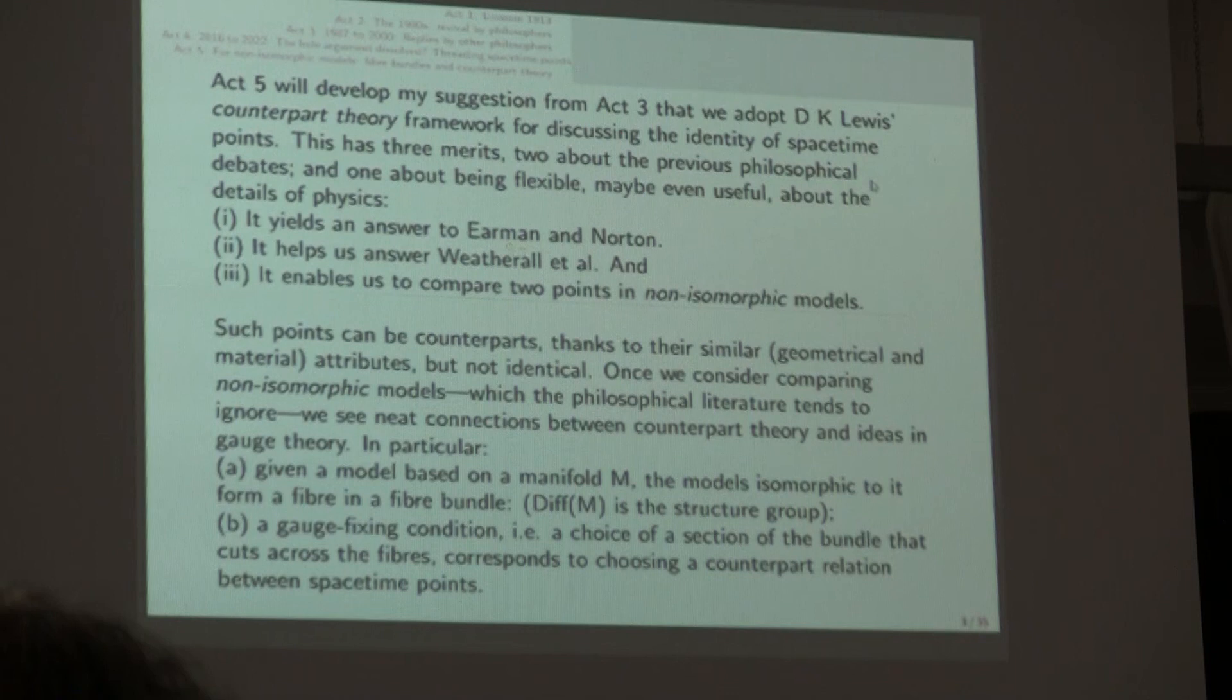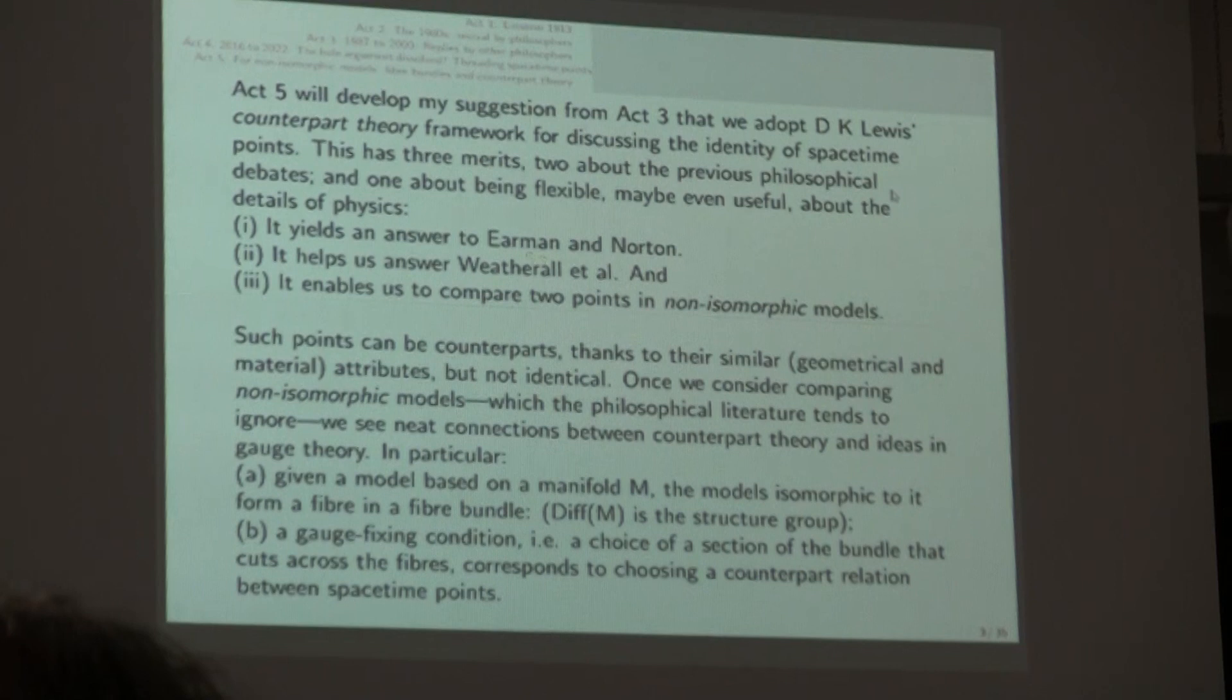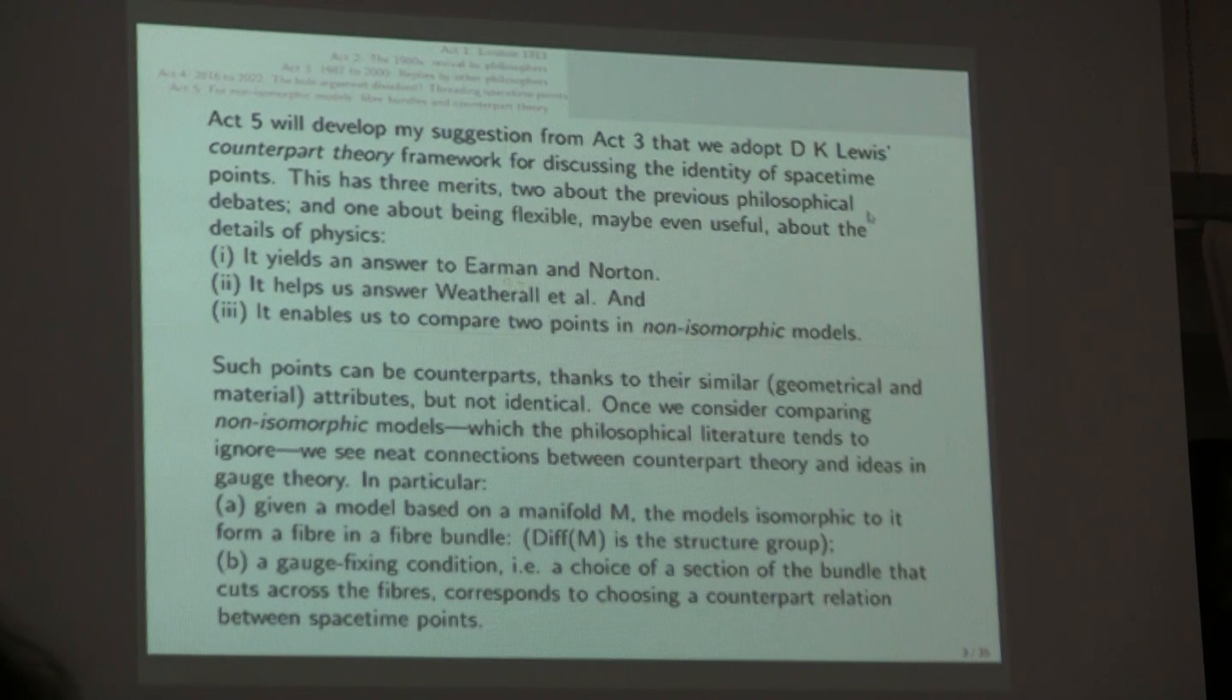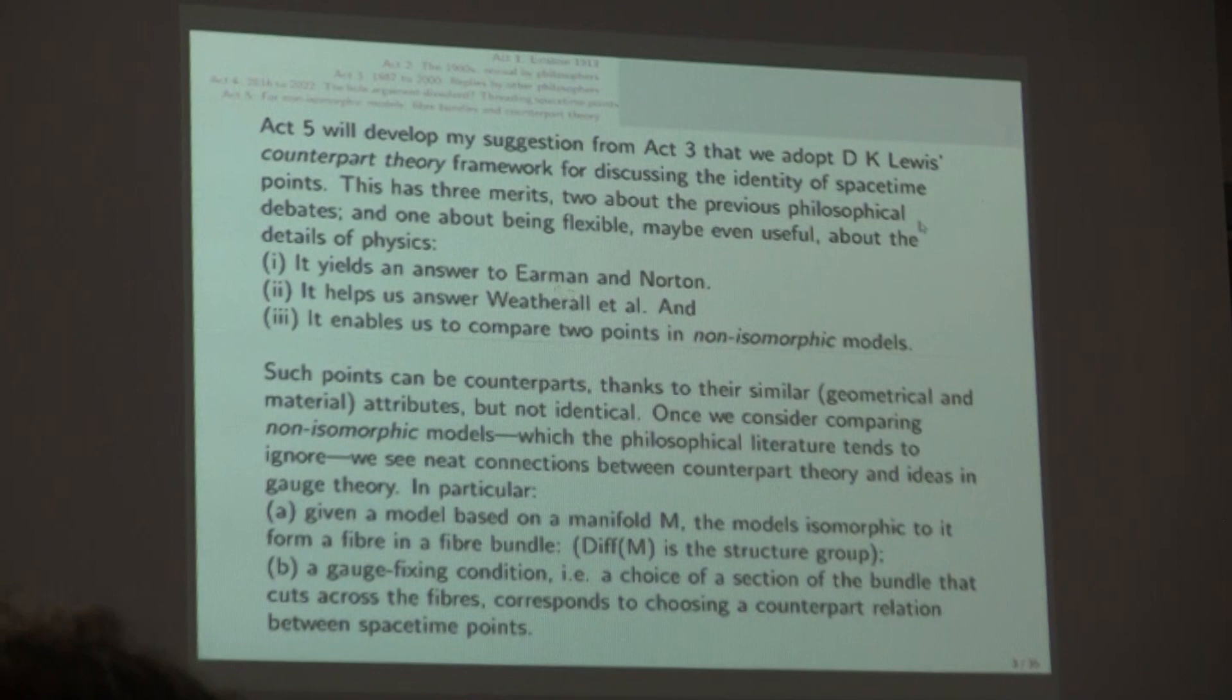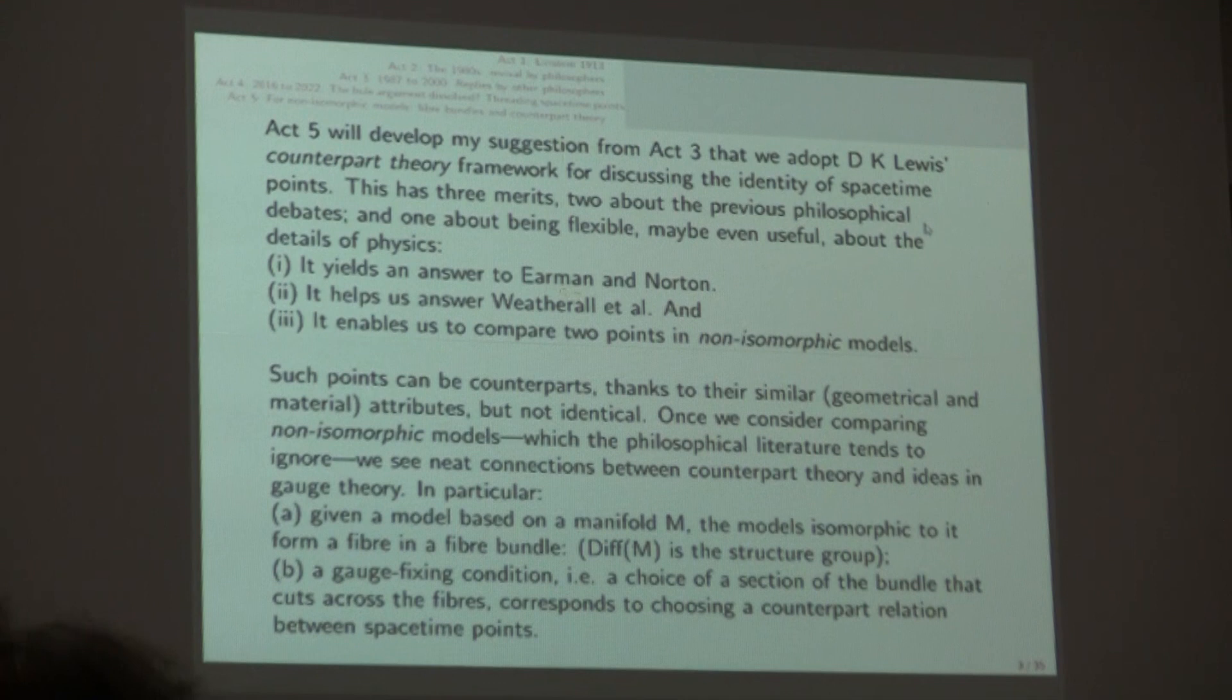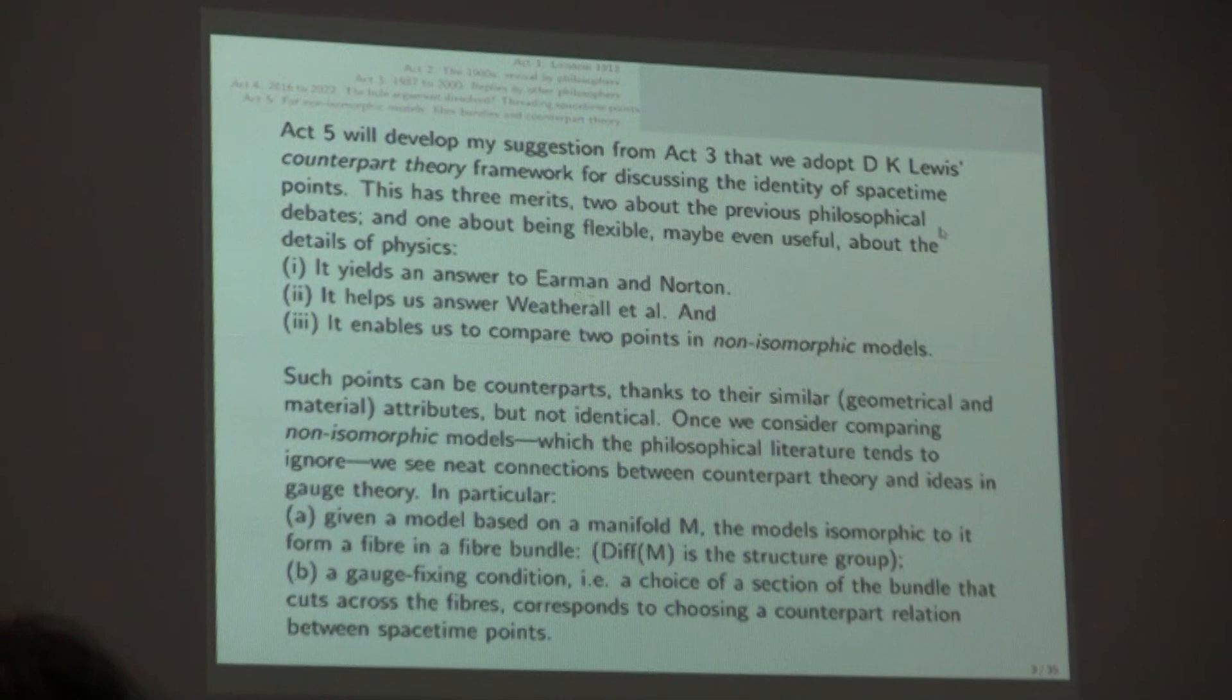They can be counterparts thanks to their having similar attributes, both in geometry and in regards to the matter fields, but they're not actually identical as objects. And we get neat connections between this philosophy framework called counterpart theory, and ideas in gauge theory. In particular, I want to stress that if you have a fixed spacetime manifold, call it N, then a model based on the manifold N, will be a fiber in a fiber bundle.